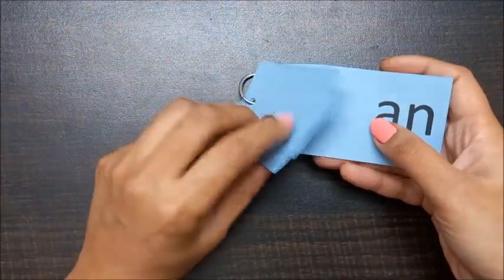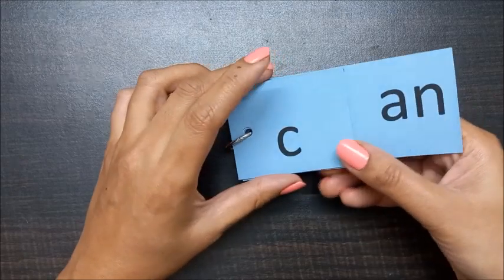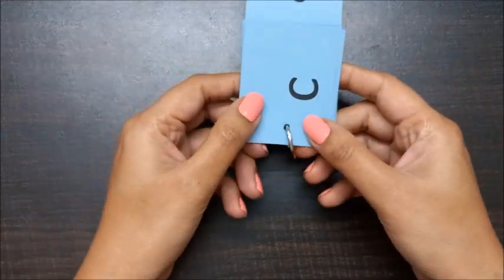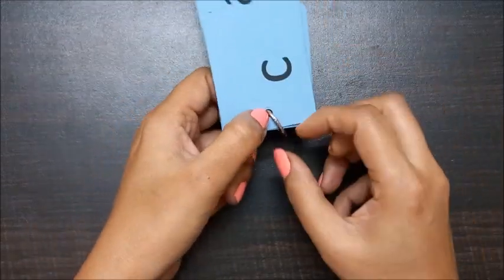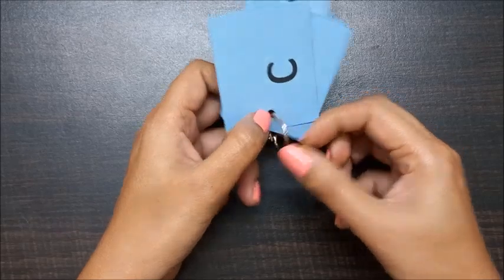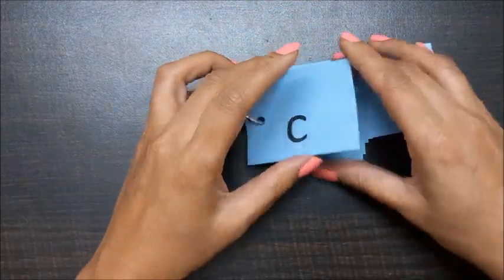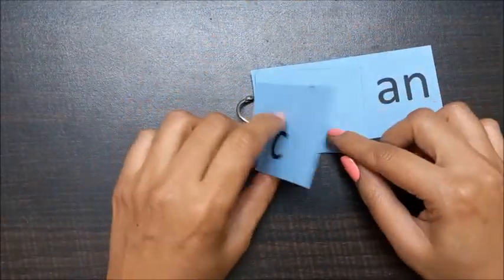It's the 'an' word, and I have cut all the strips equally. I have used a puncher and made a hole over here, and this is a binder ring. So through this, children can learn 'an' words like this...